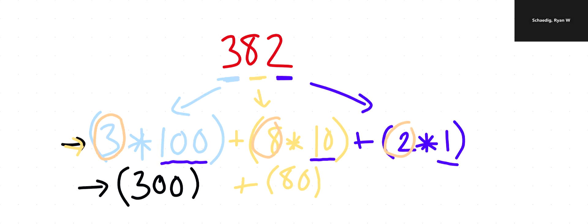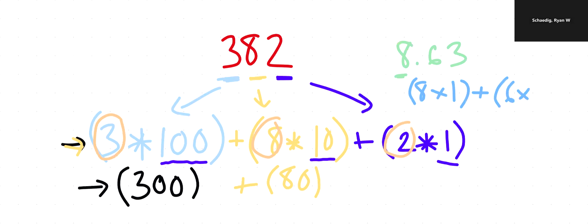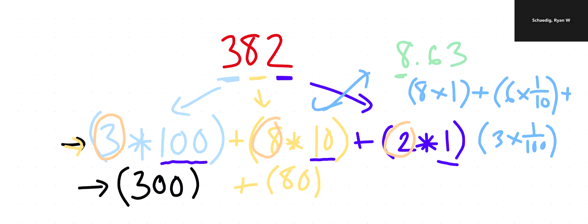I don't remember our decimal but I'll write another one — say eight and sixty-three hundredths. If we expand this one out, same idea but we get into decimal place values. This would be eight times one because it's the ones place, plus six times one-tenth, plus three times one-hundredth. This is literally the work we're going to be doing today.